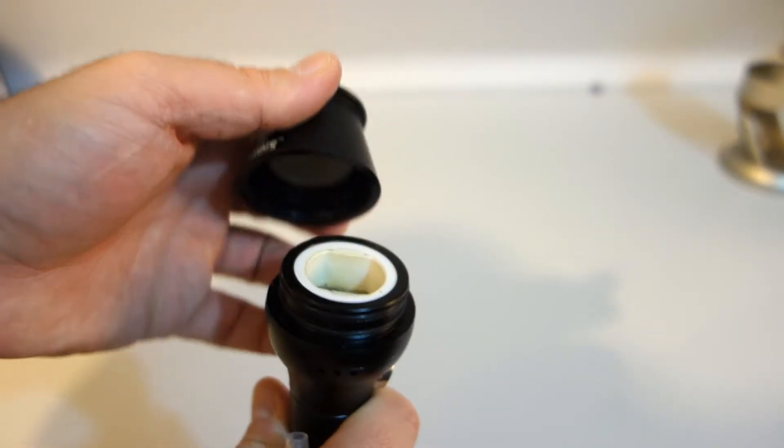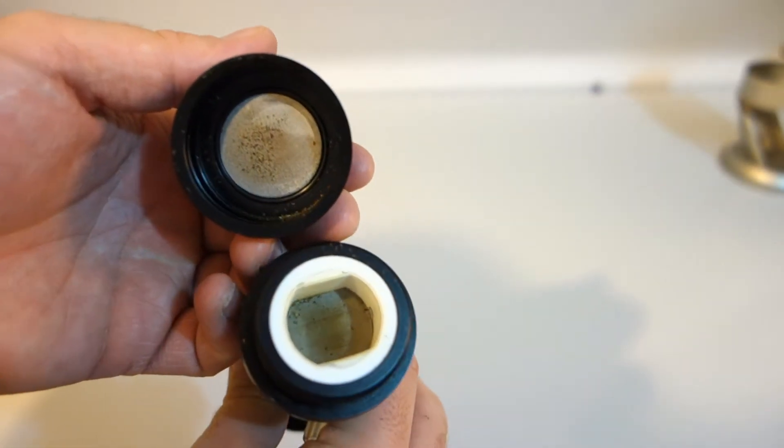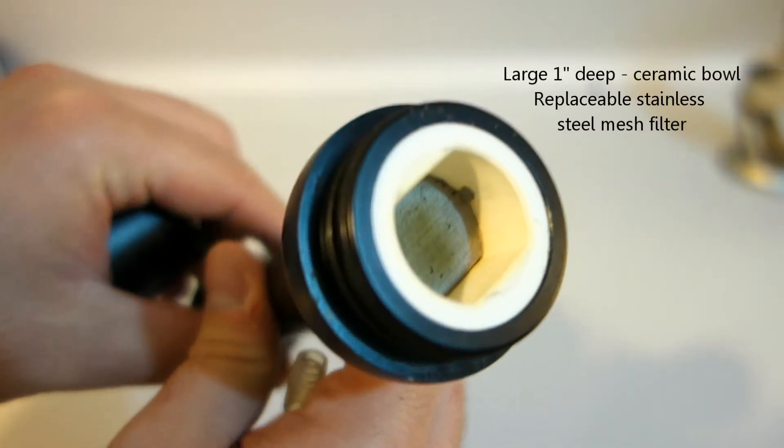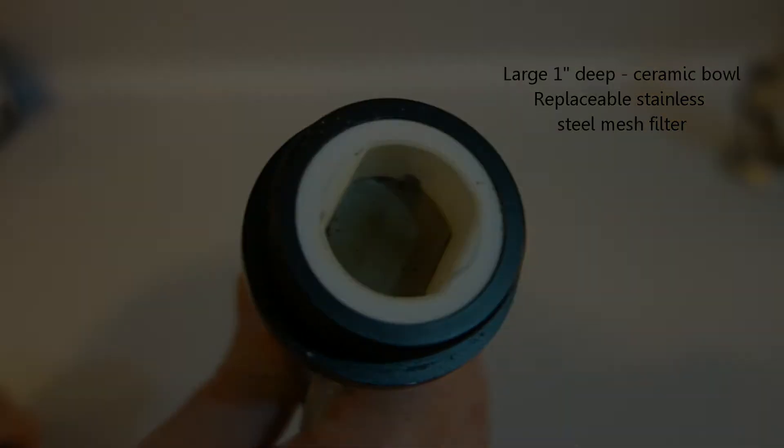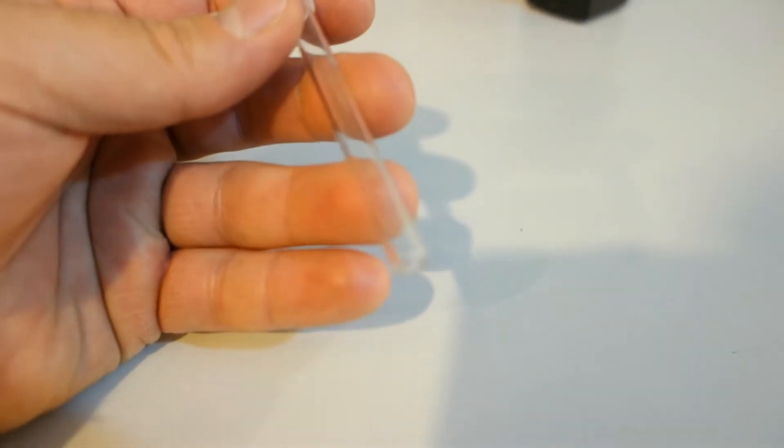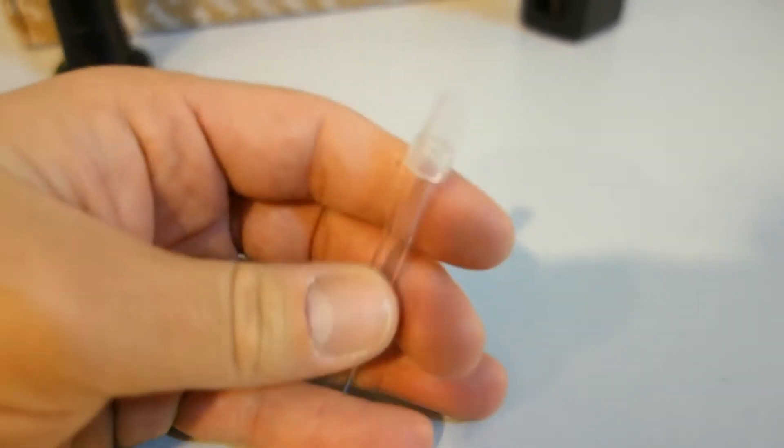Moving along to the heating chamber, we have a 1 inch deep ceramic bowl which is quite large and the fact that they chose to use ceramic means the vapor production is going to have a lot of flavor. Also having a glass drawing stem is only going to add to the equation.